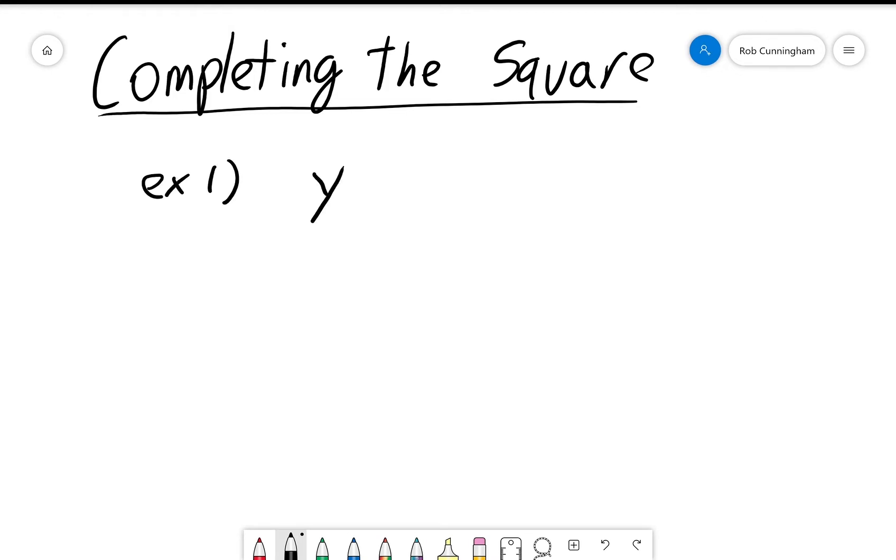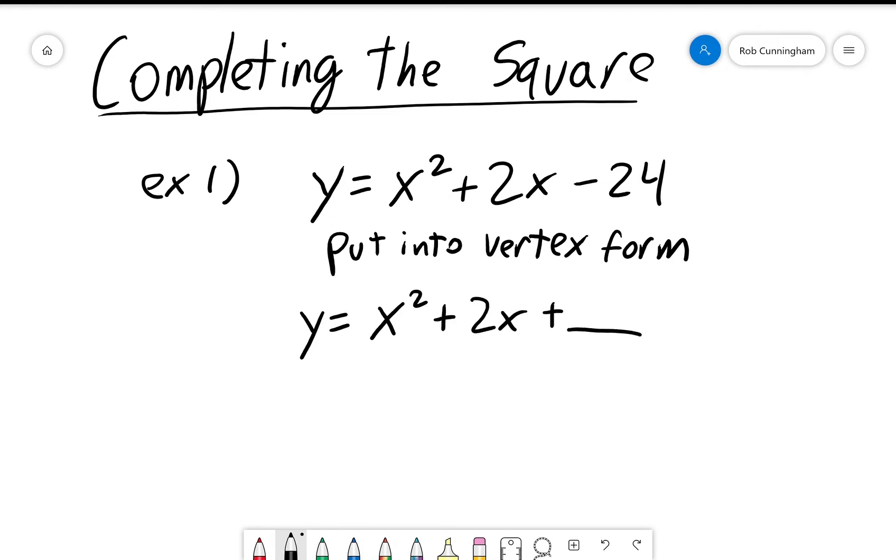Example one. What I've got here is y equals x squared plus 2x minus 24 and I want to put that into vertex form. Well, I know that vertex form involves some sort of completed square, so I'm going to put y equals x squared plus 2x plus some blank minus 24. Let's see what number belongs in that blank to make a perfect square. If I take my middle number here, 2, and I divide it by 2, I get 1, and then I square it giving me 1.